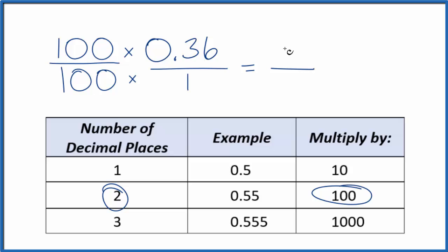So 100 times 0.36, that's 36, and 100 times 1, that's 100.